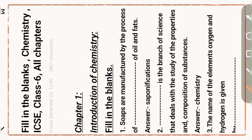We will now discuss fill-in-the-blanks for all chapters of ICSC Class 6 Chemistry, Chapter 1: Introduction to Chemistry. The first question: soaps are manufactured by the process of saponification of oils and fats. Answer: saponification.